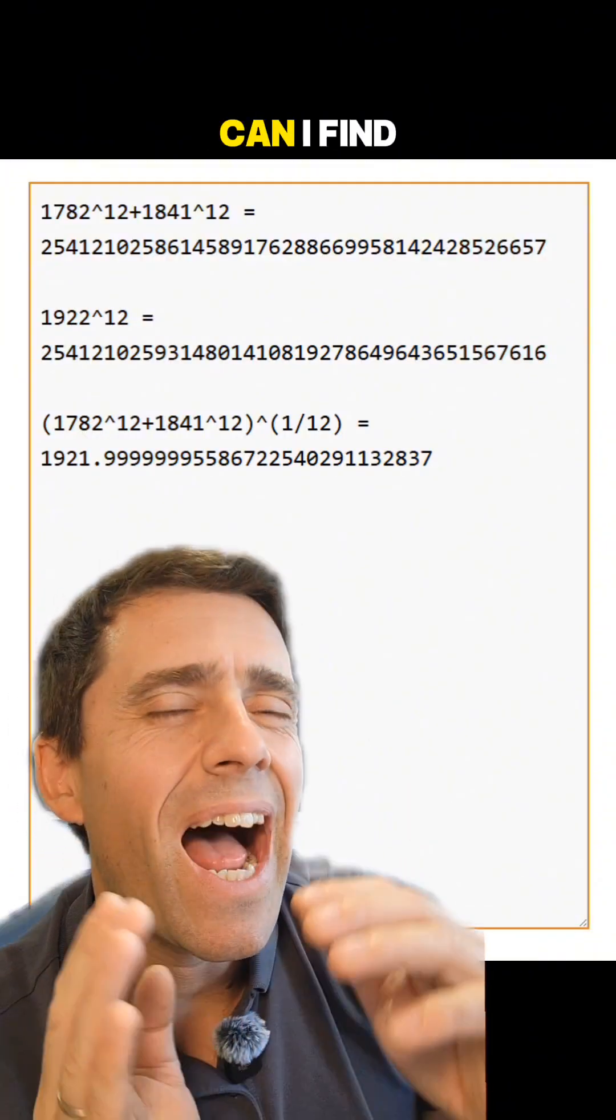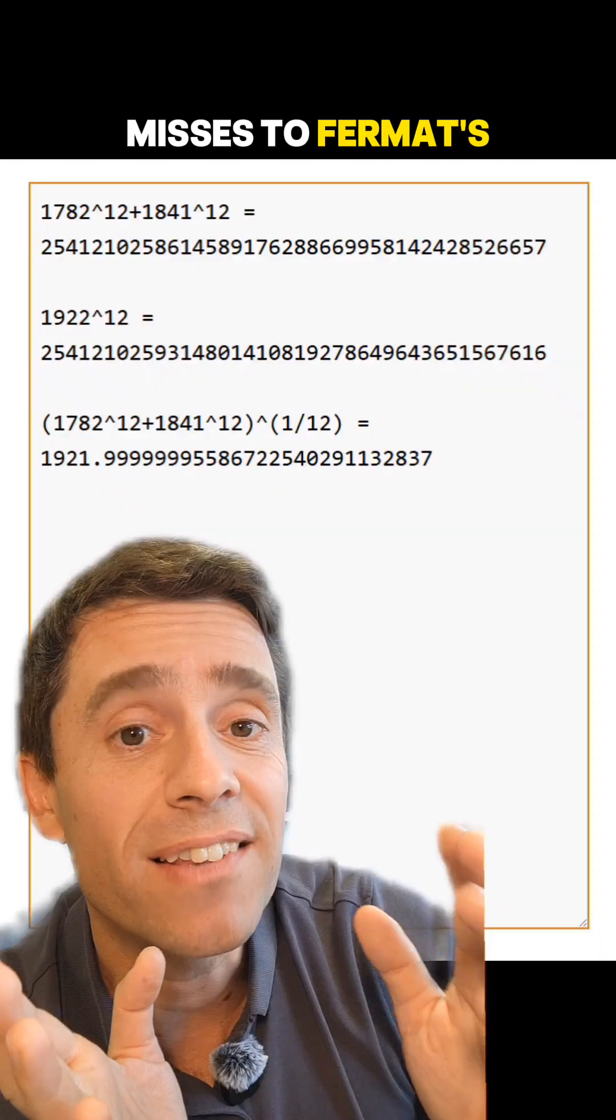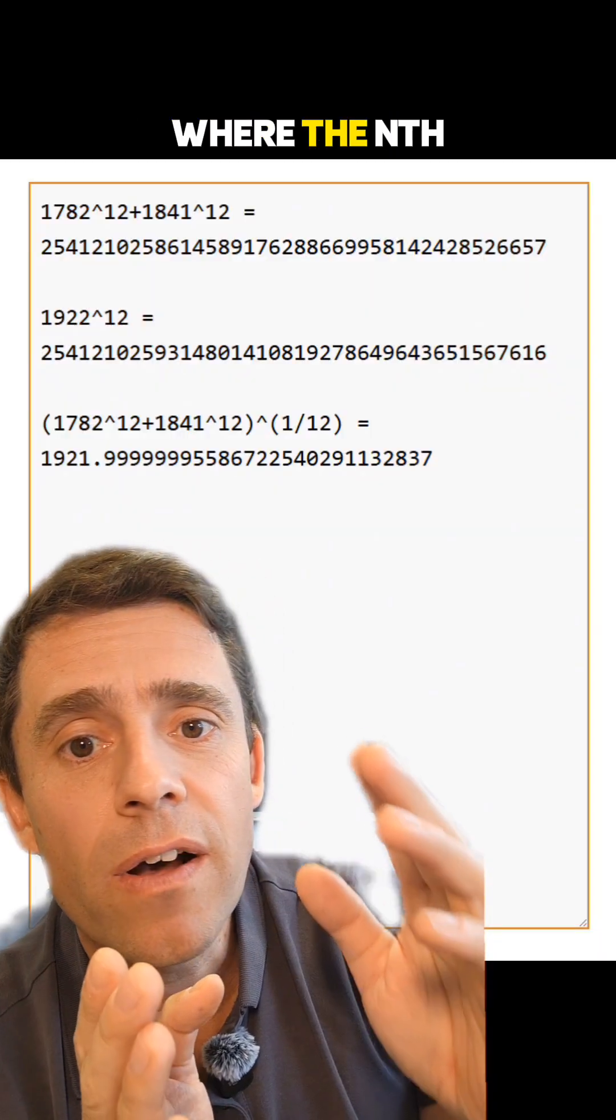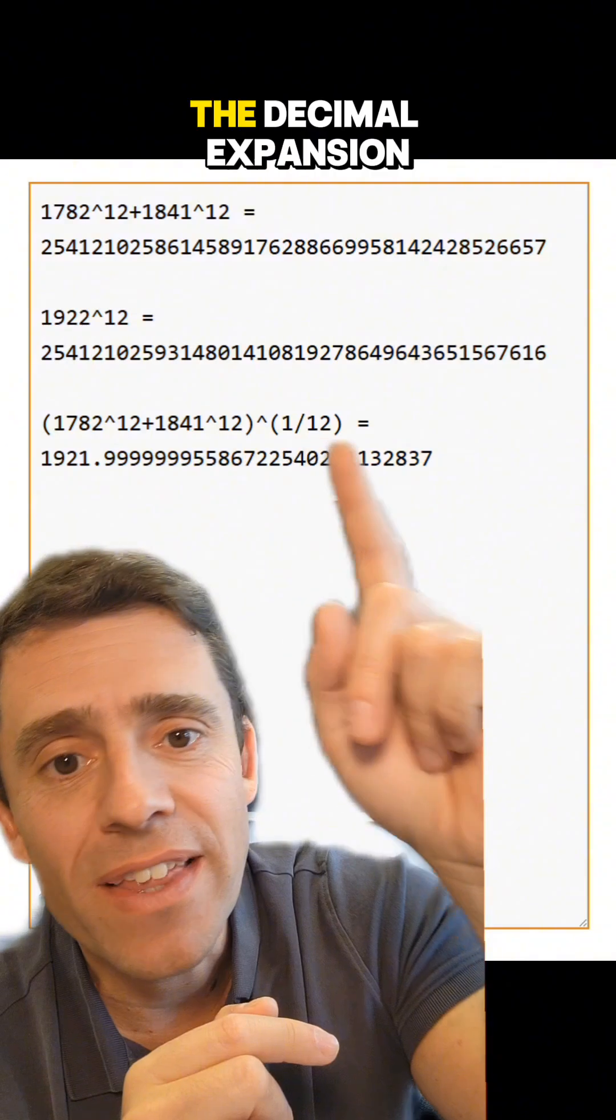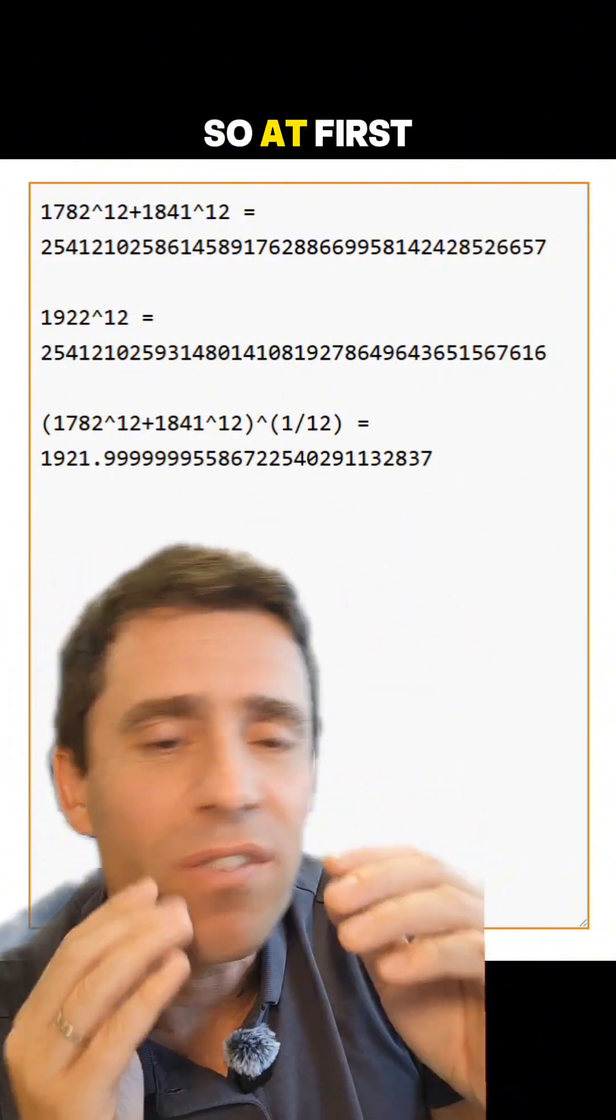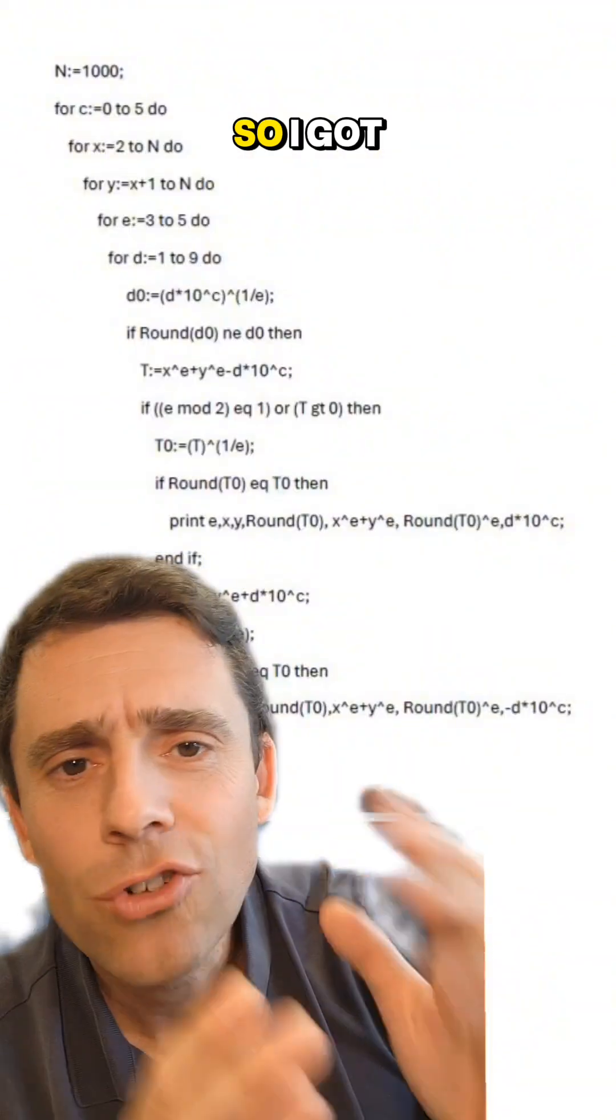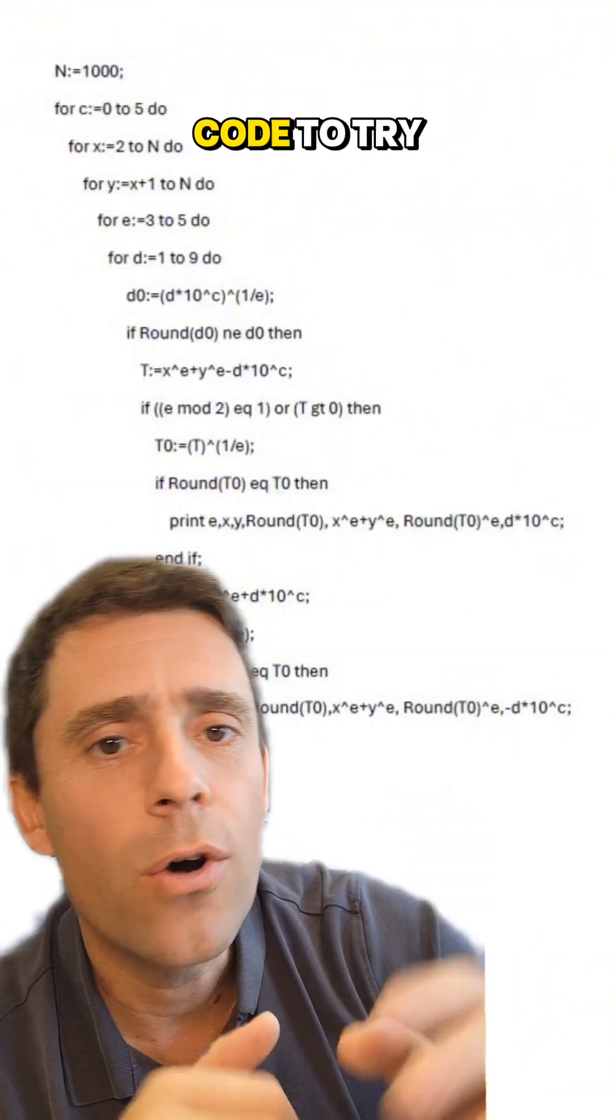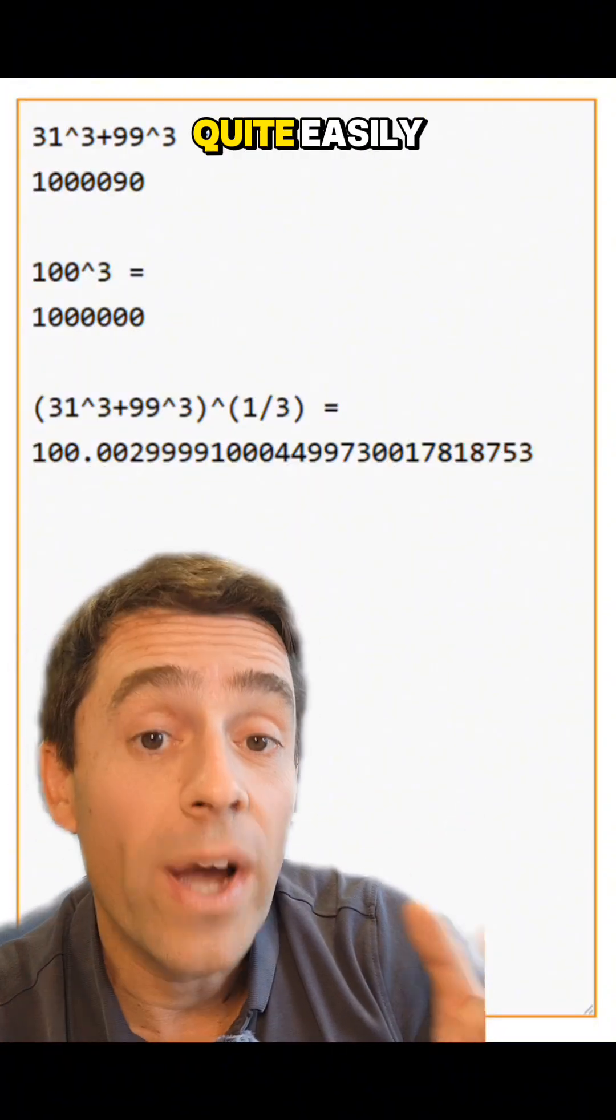So this got me thinking, can I find solutions or near misses to Fermat's equation where the nth power and the sum of the two nth powers, the decimal expansion only differs by one digit? So at first sight, it looks like they're exactly the same number. So I got cracking, wrote some code to try to find examples, and one can find such examples quite easily.